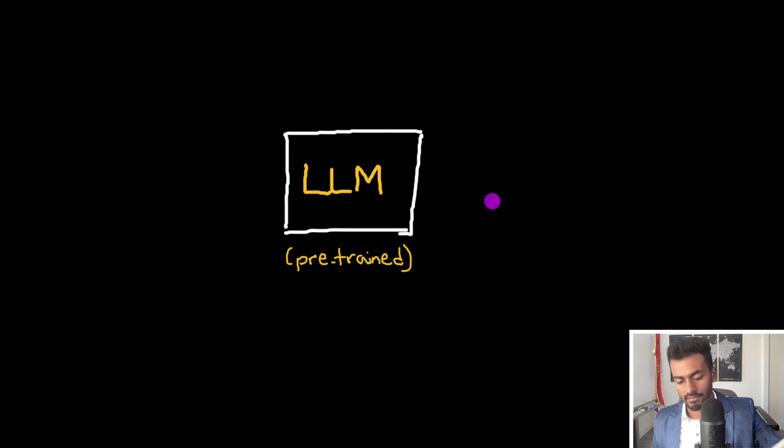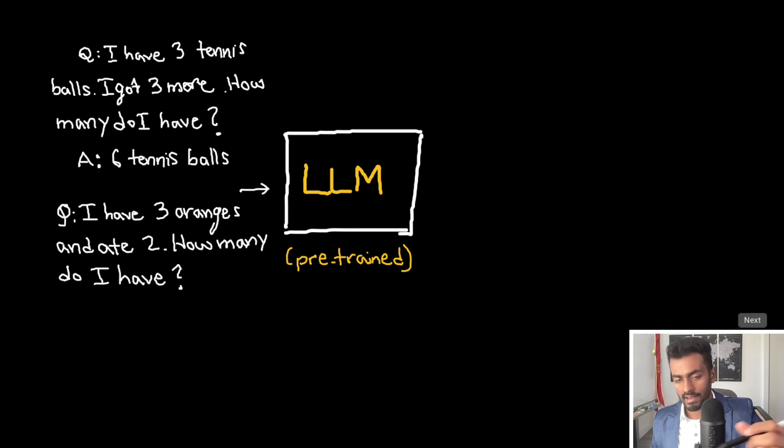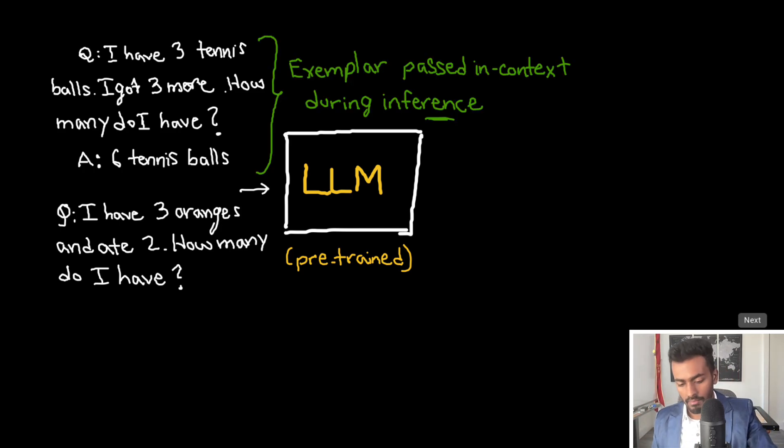So for few shot learning, we have this LLM that's pre-trained on language modeling. And instead of just passing in a direct question, which you want to answer to, we will pass an exemplar problem. So we pass in a question where I have three tennis balls, I got three more. How many do I have? The answer is six. This is a complete example of what we want our model to do.